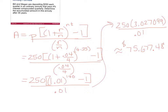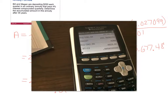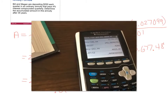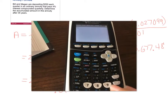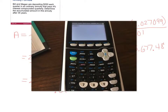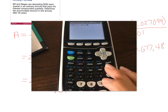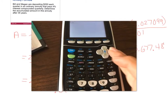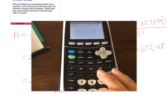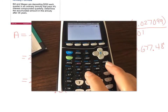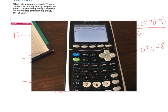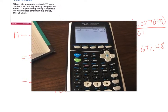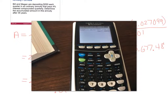You can try and type this all in one step if you want. Put the entire numerator in a set of parentheses: 250 times the quantity 1 plus 0.04 over 4 raised to the 4 times 35 minus 1, then close and divide by the denominator in parentheses. The result is $75,677.48. I like to do everything in one step in the calculator, but there is a higher risk of mistakes when you do that.